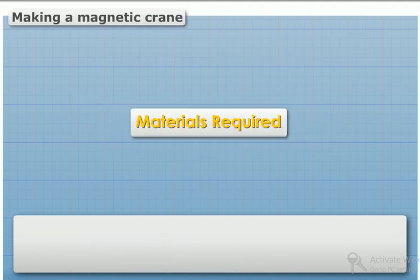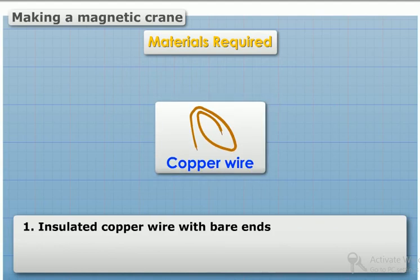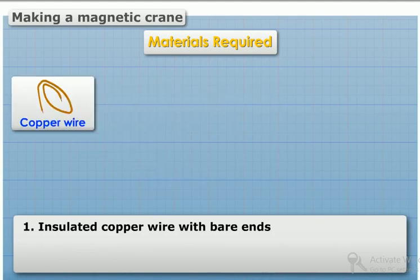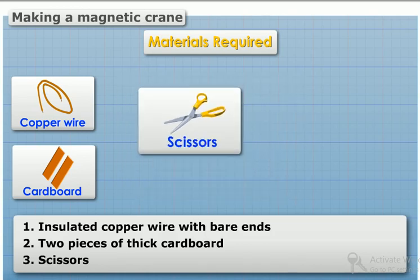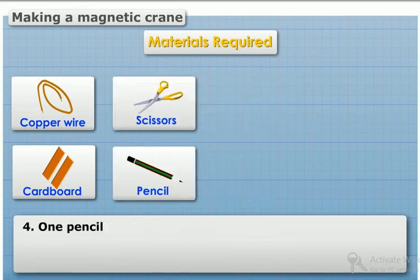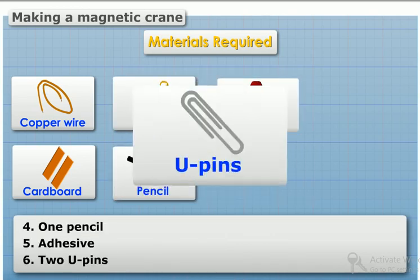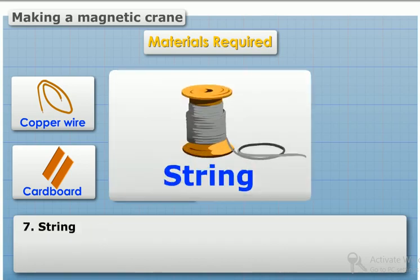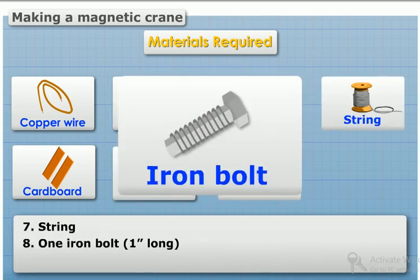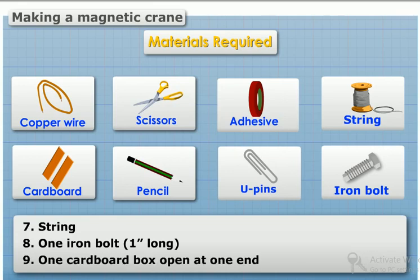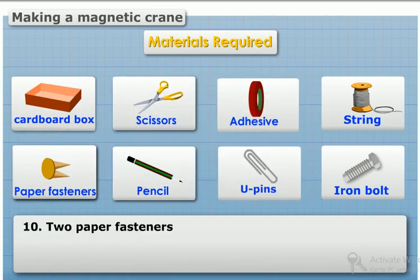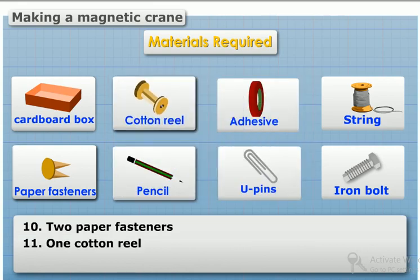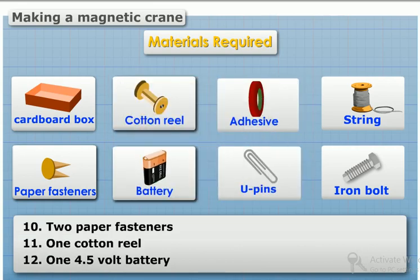Requirements: Insulated copper wire with bare ends, two pieces of thick cardboard, scissors, one pencil, adhesive, two U-pins, string, one iron bolt one inch long, one cardboard box open at one end, two paper fasteners, one cotton reel, one 4.5 volt battery.